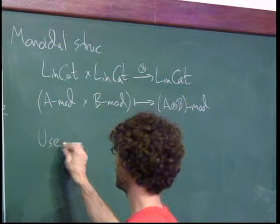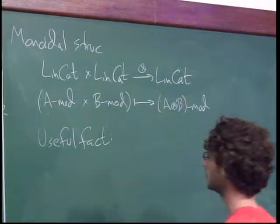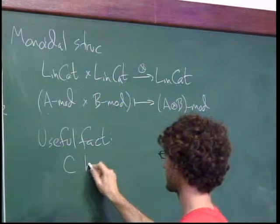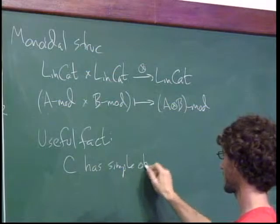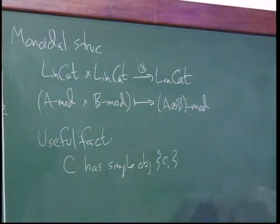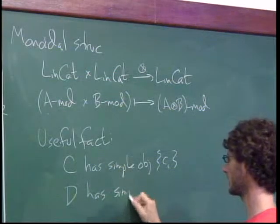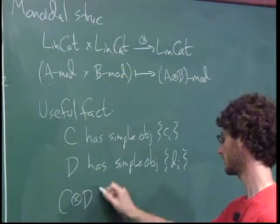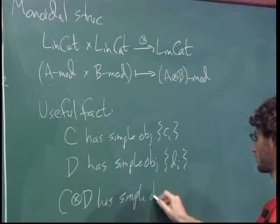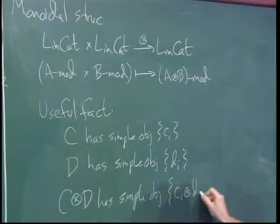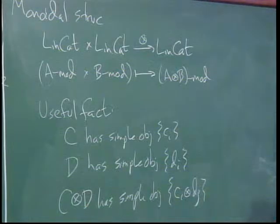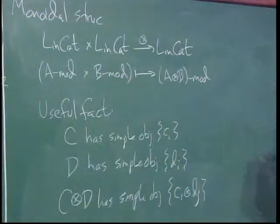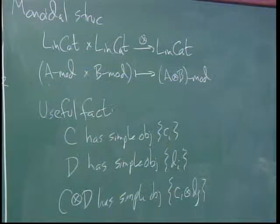Another useful fact: if C is a linear category with simple objects {C_i} and D is another with simple objects {D_j}, then the tensor product of C and D has simple objects given by formal elementary tensors C_i ⊗ D_j. This is the categorified version of the statement that tensor products of vector spaces have bases given by products of basis elements.